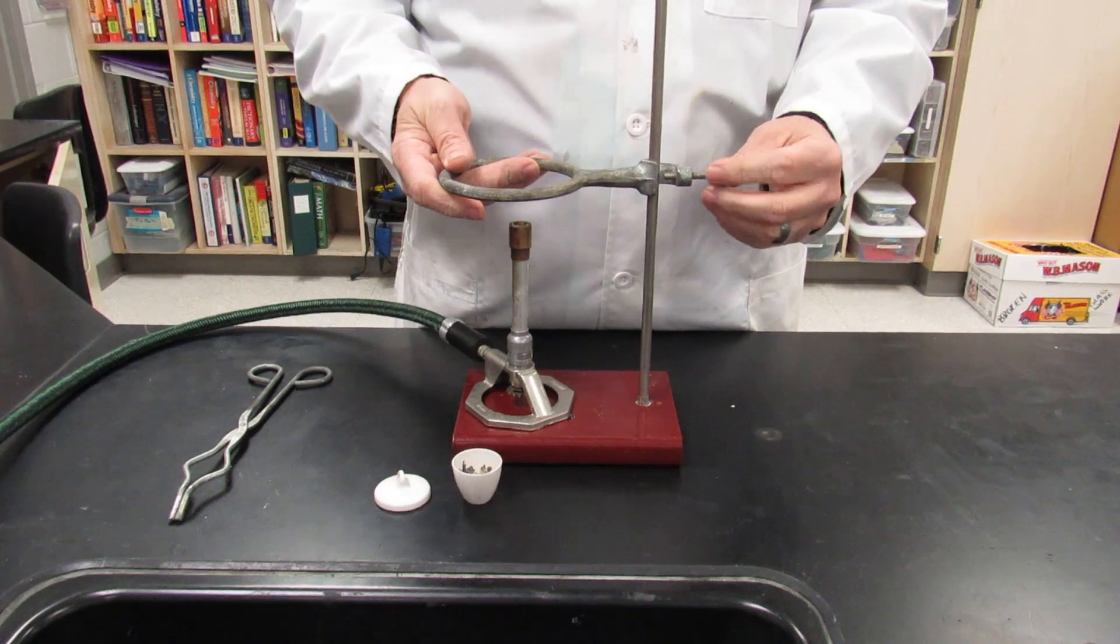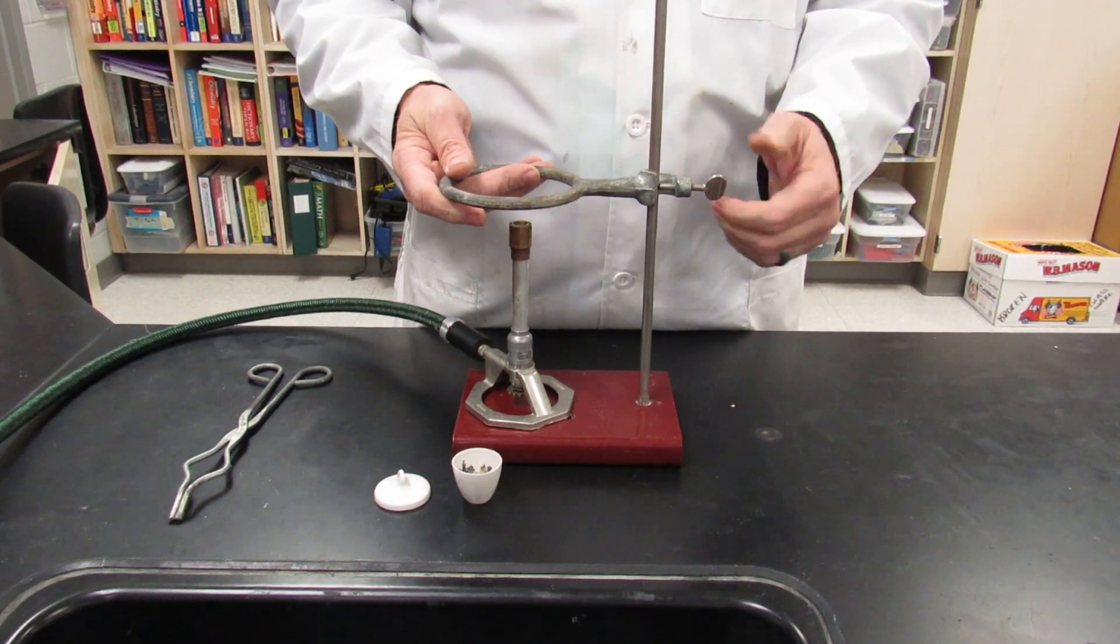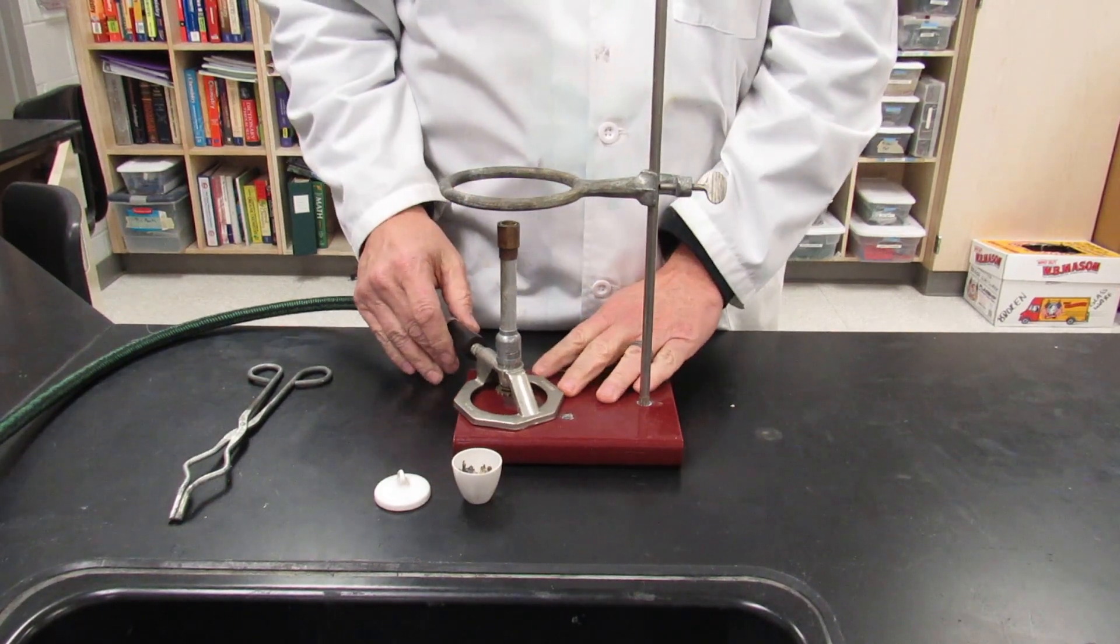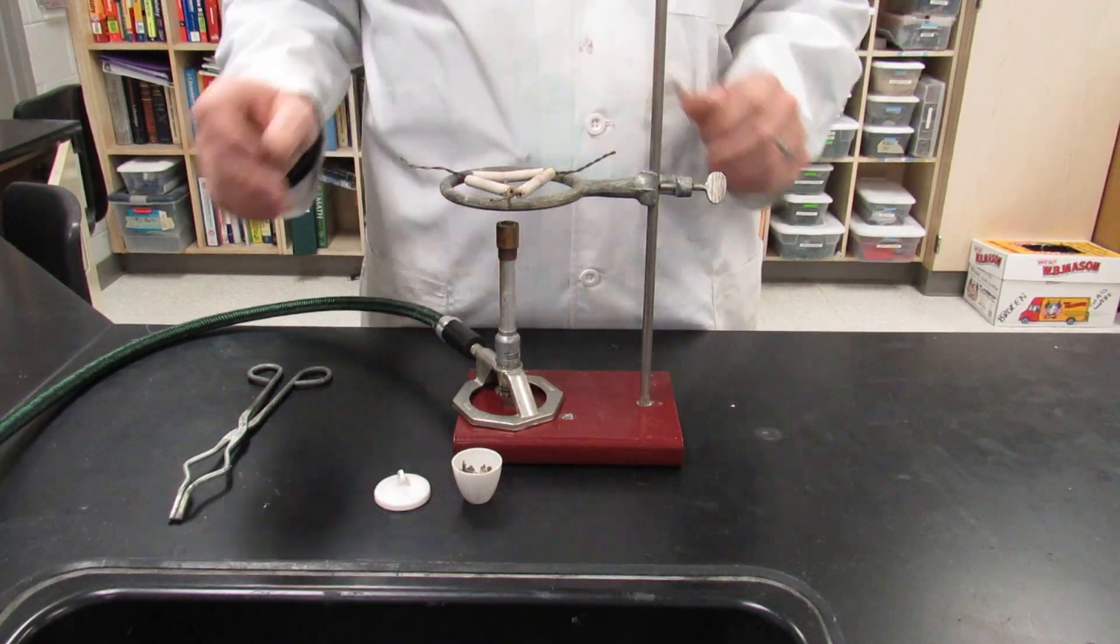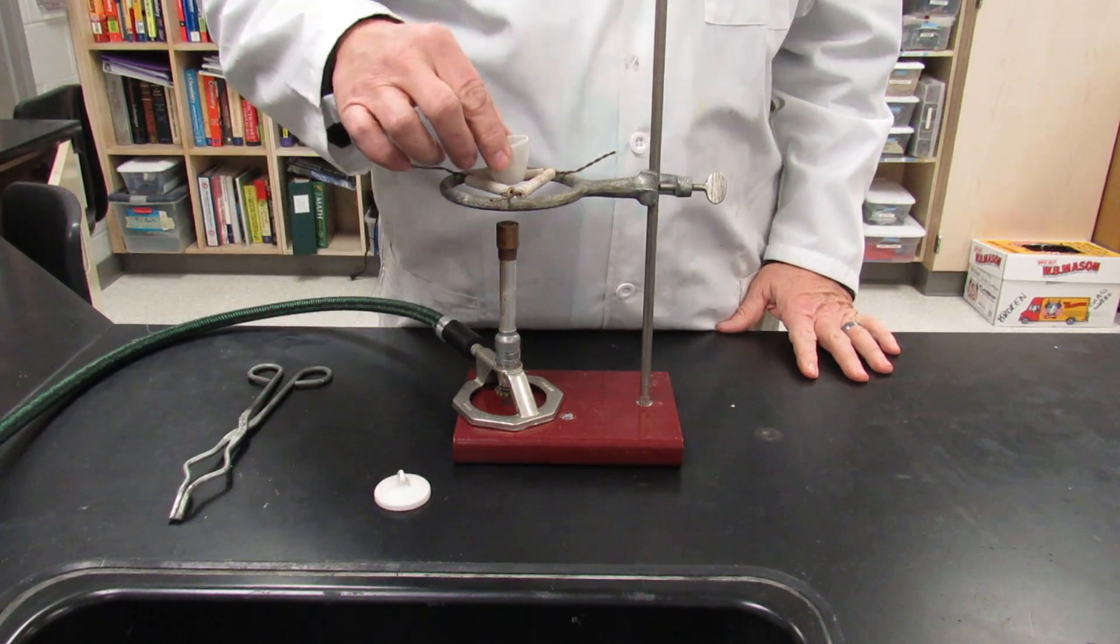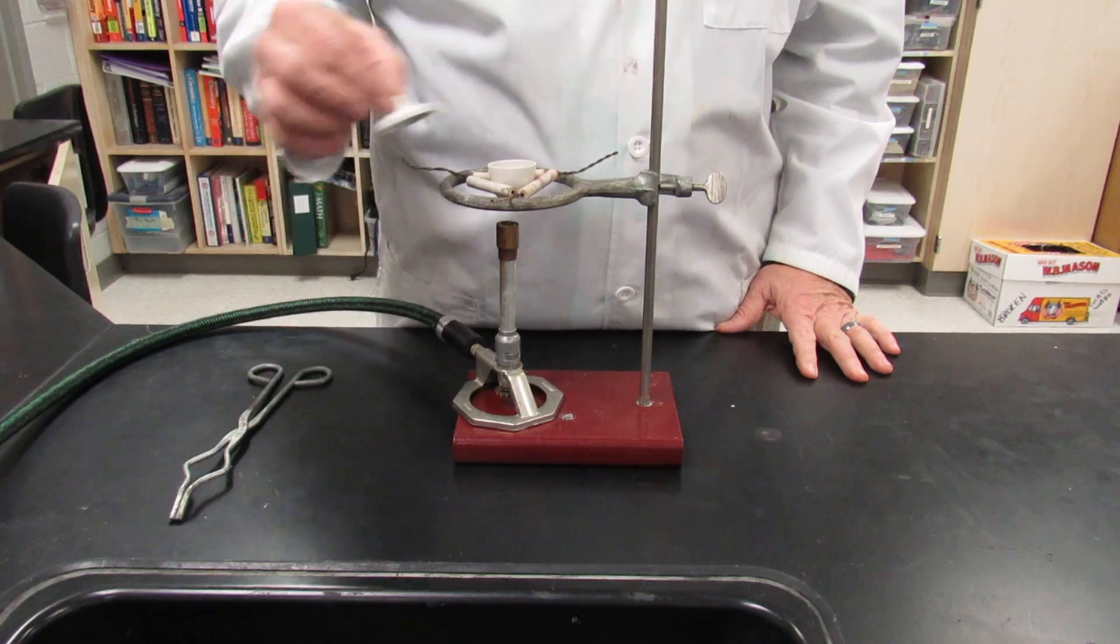This time you're going to be a little bit closer to the flame. You want to have a much more intense heat for this lab. You're going to add your clay triangle and then your crucible. Make sure your crucible doesn't fall through the hole in the triangle. And then put your lid on.